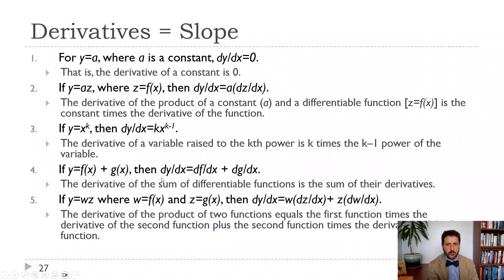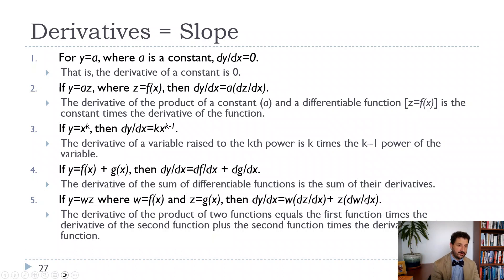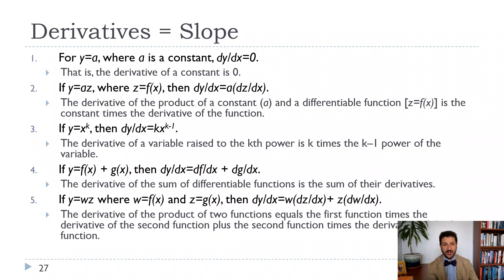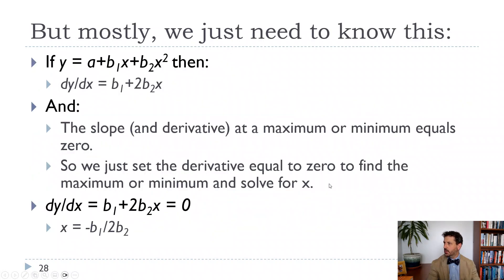A couple more rules: if we have the sum of two functions f(x) + g(x), we can take the derivative of one plus the derivative of the other. If we have a product, it's the first times the derivative of the second plus the second times the derivative of the first. That's all we need — we do not need any other derivative rules. We'll mostly use the power rule and occasionally the sum rule.